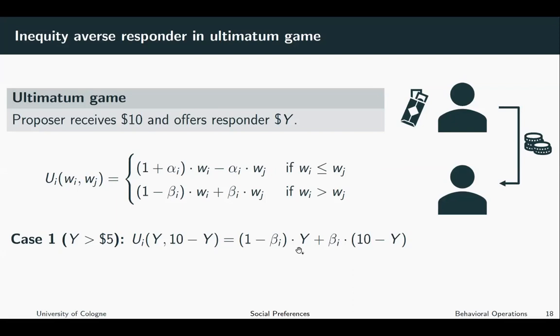So the responder has a utility, has a monetary payoff of Y and the proposer a monetary payoff of 10 minus Y if the responder accepts. Let us look at the formula and we see that this term is positive since beta i is smaller than one. Furthermore, we know that Y is positive and 10 minus Y is also positive.